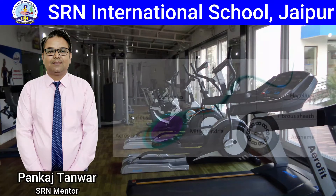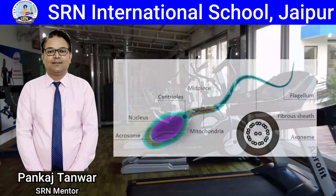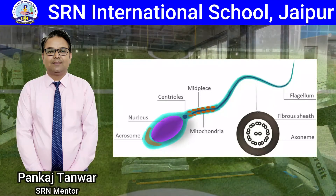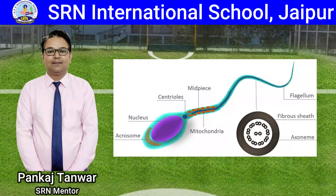The second part is the neck. It contains proximal centrioles, which are necessary for the first cleavage division of the zygote, and the distal centrioles, which are connected to the tail filament.